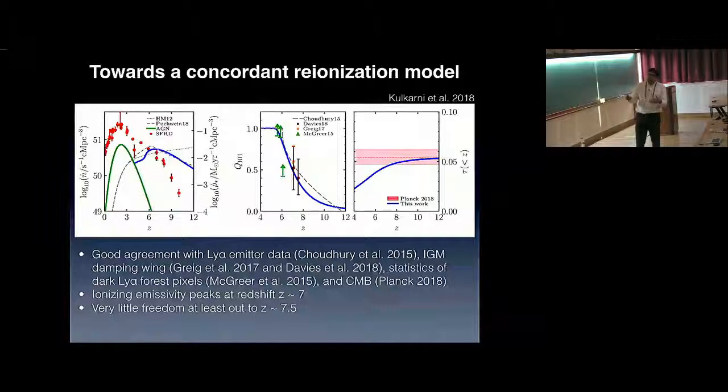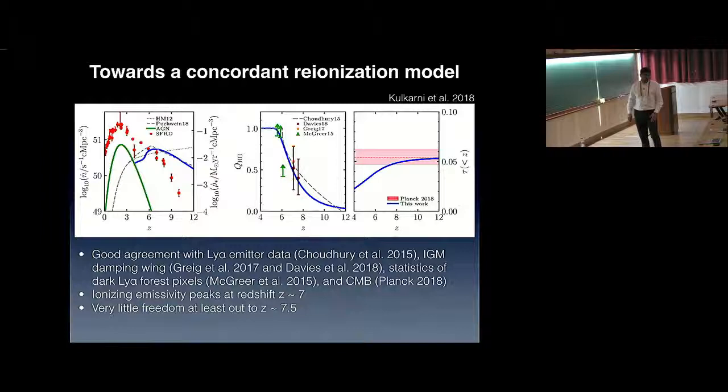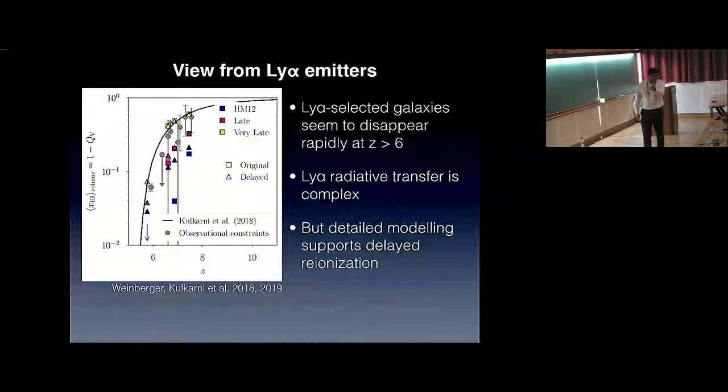I will just mention that it turns out this result seems to be concordant—it matches with many other things we have been learning about reionization, and suddenly everything makes sense now. For example, the Planck 2018 measurement of the tau falls right on top of the value in this model. The damping wing analysis from redshift 7.5 quasars falls right on top of the evolution of the neutral hydrogen fraction. The dark pixel analysis, too, agrees with this model. I'll just skip work we have done on Lyman-alpha emission.